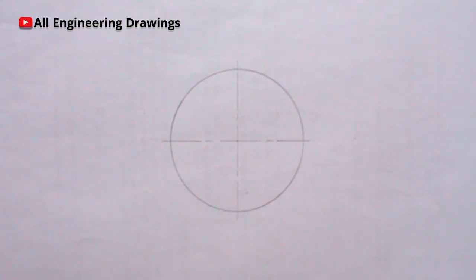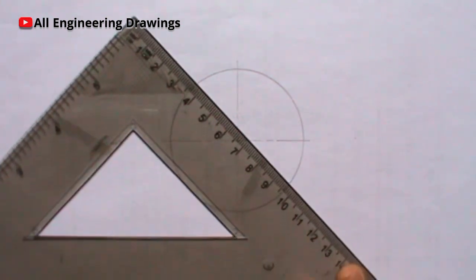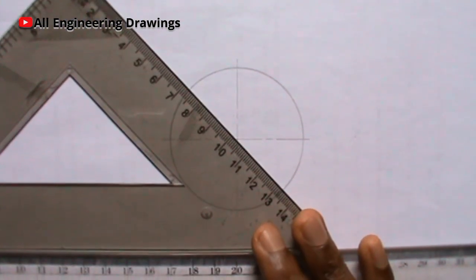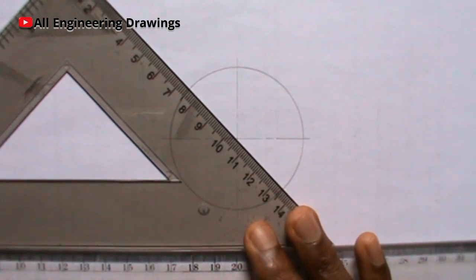Now I will complete the division using my 45-degree set square. Remember to support your set square with your T-square.